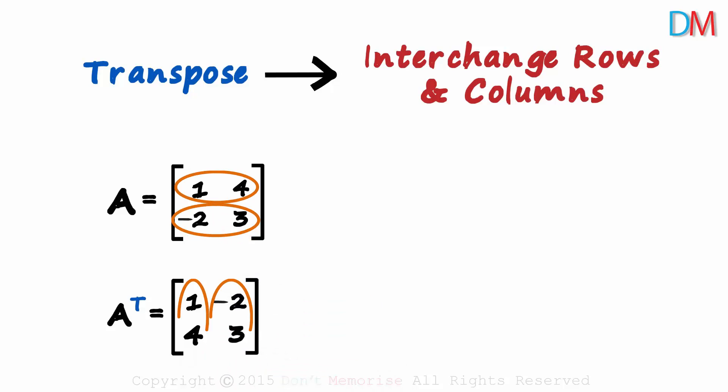The rows of the matrix become the columns of its transpose. Or we can also say that the columns of the matrix become the rows of its transpose. Column 1 became row 1 and column 2 became row 2.